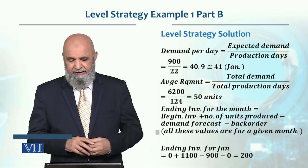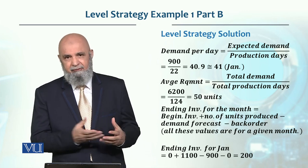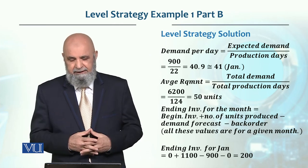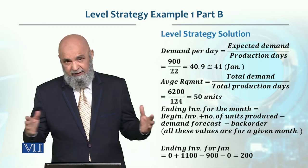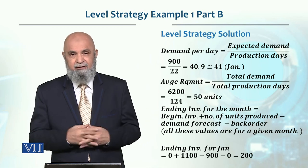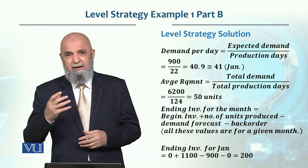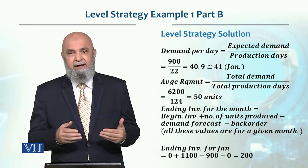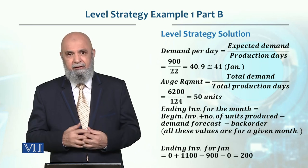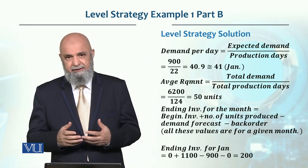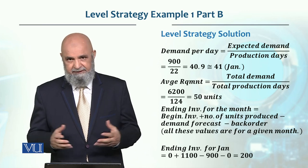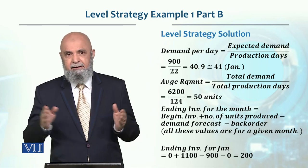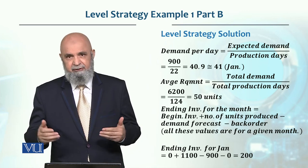The average requirement is that if we use a level strategy, then the average daily demand will be over the planning horizon. The total demand during this six-month planning horizon is 6,200. We have 124 production days, so 6,200 divided by 124 gives us 50 units per day — that is the daily demand over the whole planning horizon.